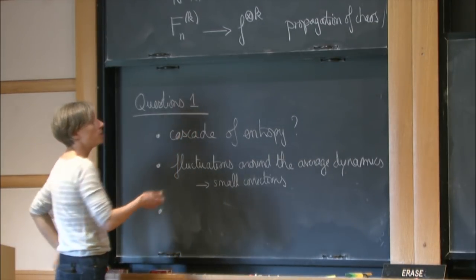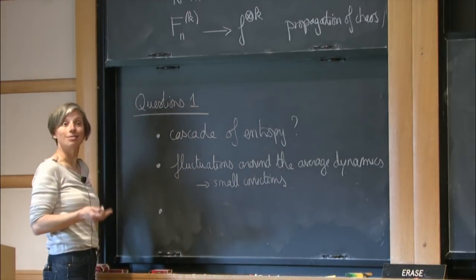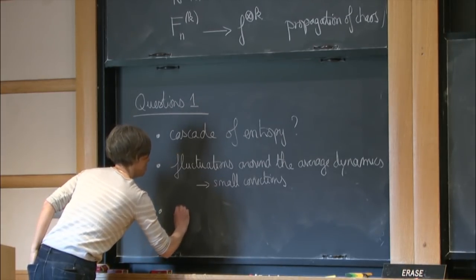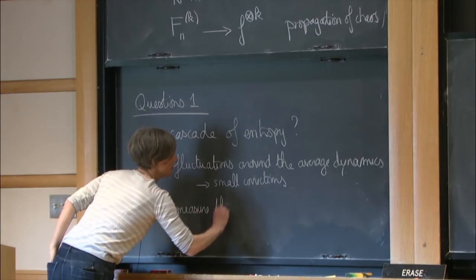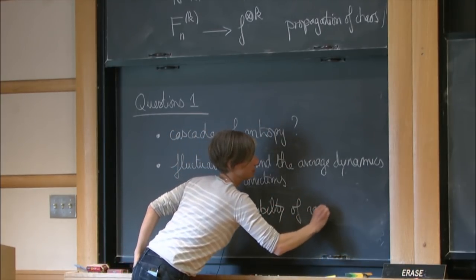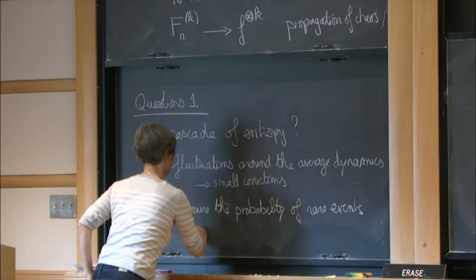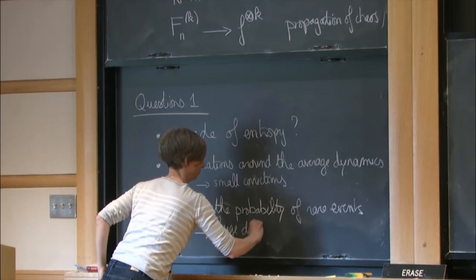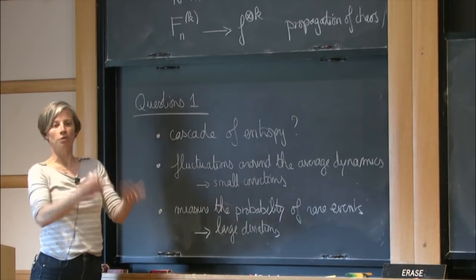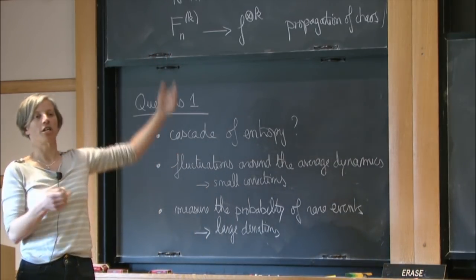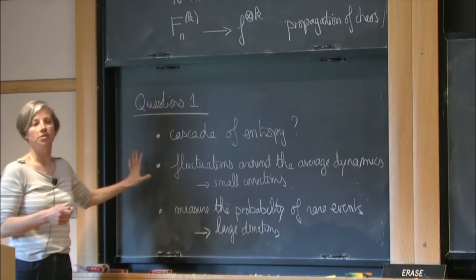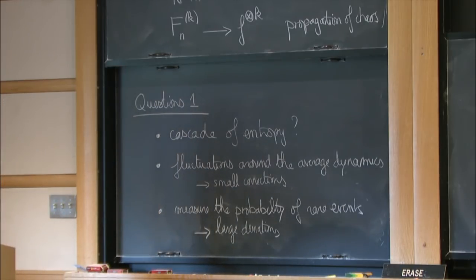You expect the fluctuations to be of a much smaller order, and you would like to focus on these small scales — these are small corrections. Another thing you could be interested in is: sometimes it may happen that you observe something other than the Boltzmann dynamics. Even though it happens with probability almost one, sometimes something else could happen — for instance, just looking at the reverse dynamics. This leads to the probability of rare events, what is called large deviation in probability.